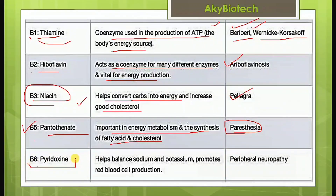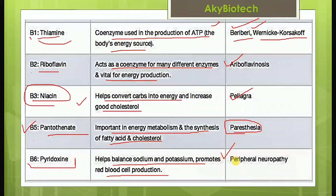Vitamin B6 is pyridoxine. It helps balance sodium and potassium and promotes red blood cell production. Deficiency of B6 leads to peripheral neuropathy.